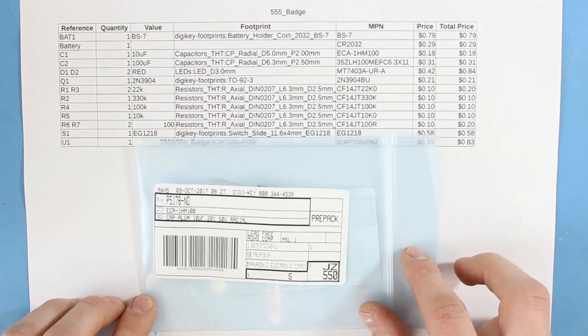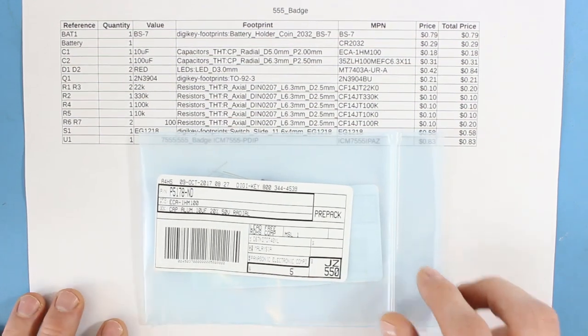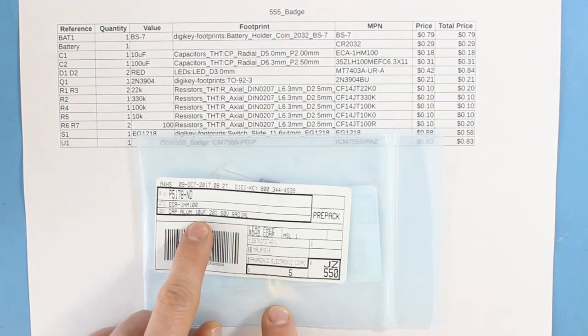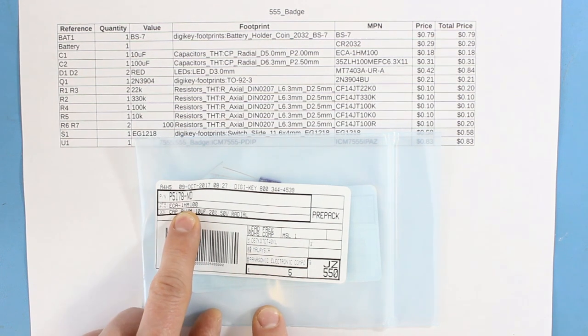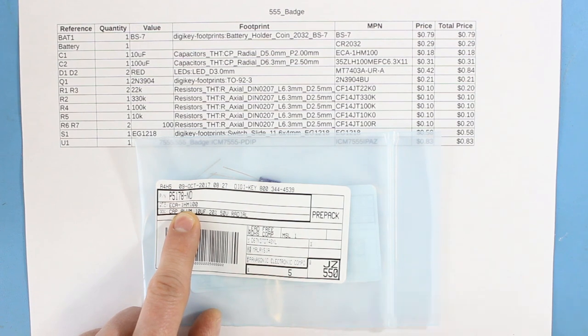Grab one of your bags of parts from DigiKey and take a look at what's in it. Here, I have my 10uF capacitors. Make sure that the manufacturer's part number matches up on the BOM, ECA1HM100.